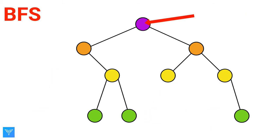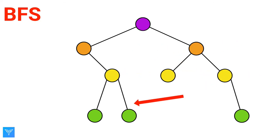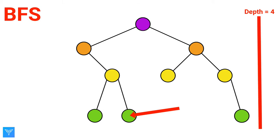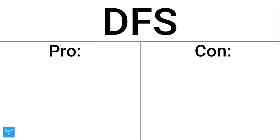For BFS, you start at the root of the tree, or a selected node in a graph, and search each subsequent level of nodes before moving on to the next level. DFS is good for searching tall trees, or trees that are deeper than they are wide.